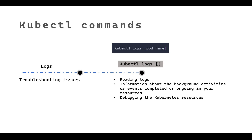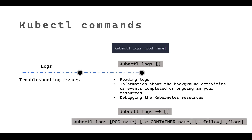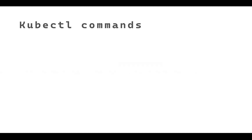With `kubectl logs` you can read logs and information about background activities, completed events, or ongoing resources to get complete details. This also helps you debug kubectl resources. For example, you write `kubectl logs` and the pod name to get all the logs for that pod. You can also use `-f` for streaming logs, and you can even go into the container level to get container-specific logs.